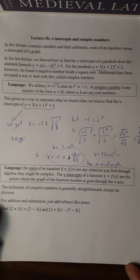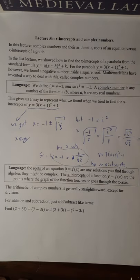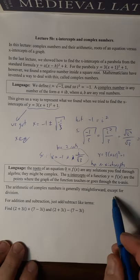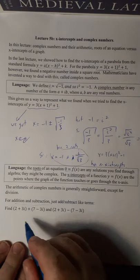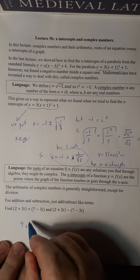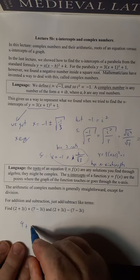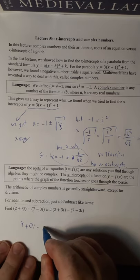So the rest of this short lecture is just going to be about arithmetic of complex numbers, which is generally straightforward except for division. Addition and subtraction, just add and subtract like terms. So 2 plus 7 is 9. 3i plus minus 3i is 0i. So that's just 9.